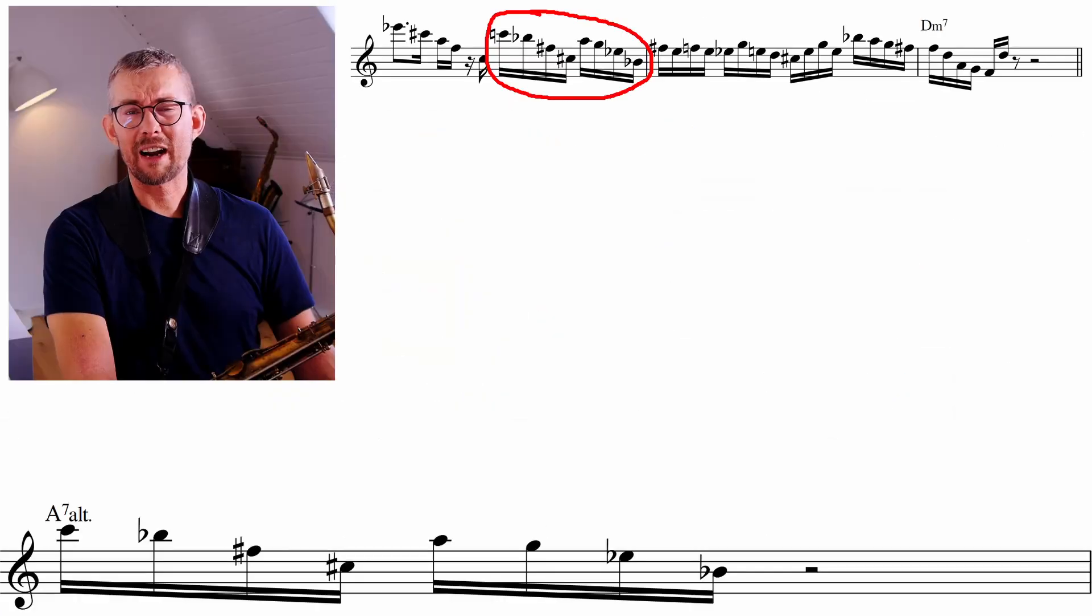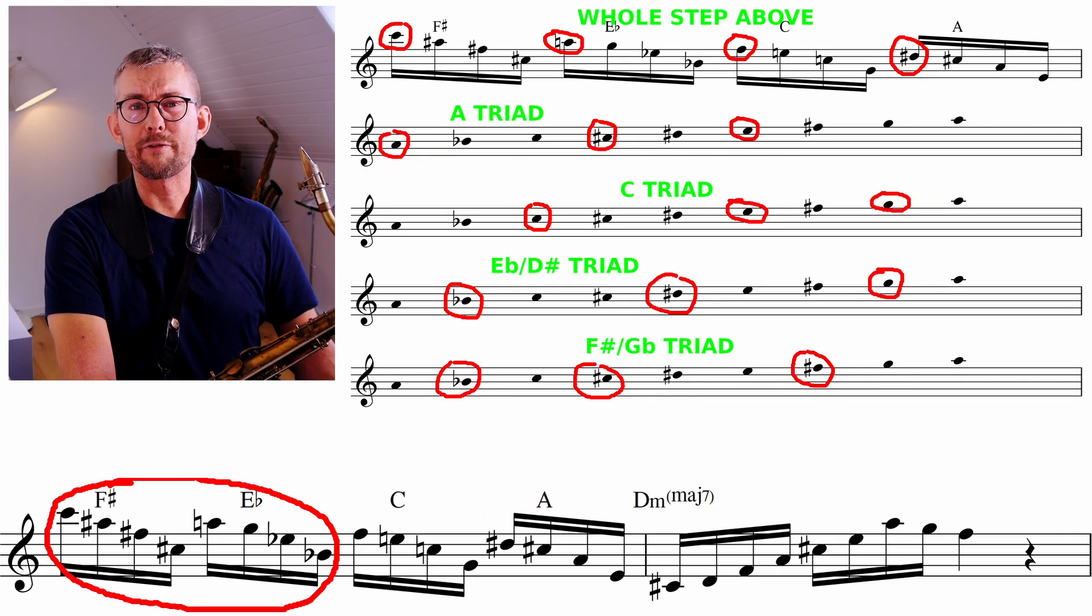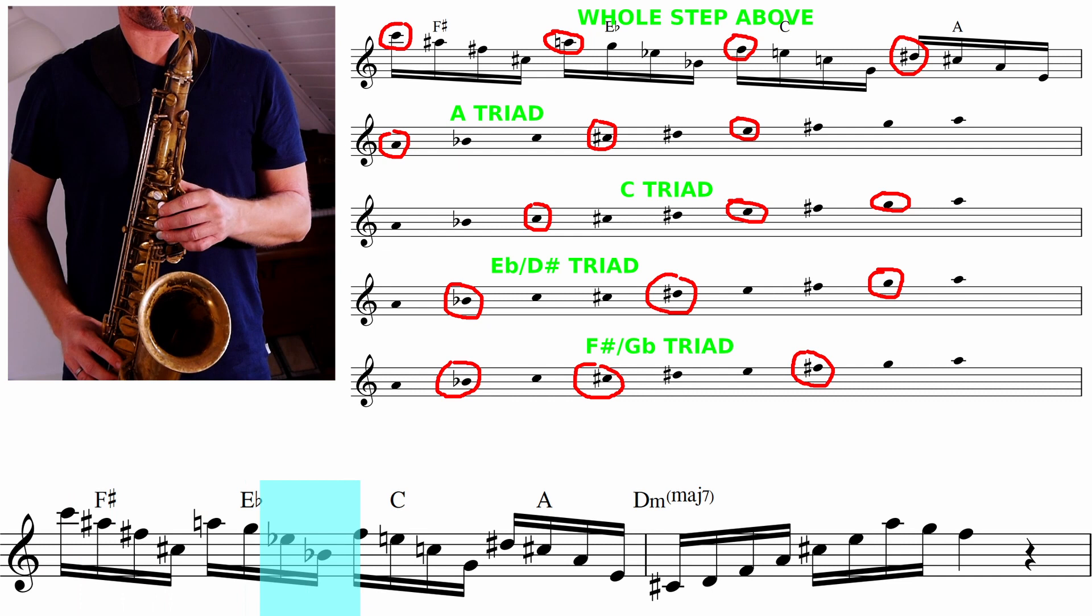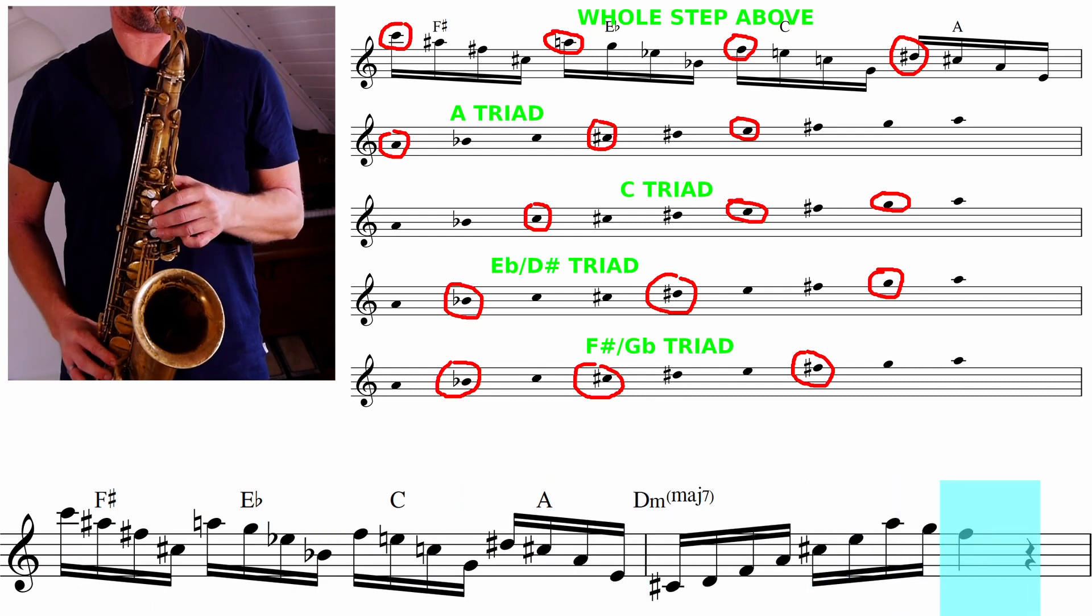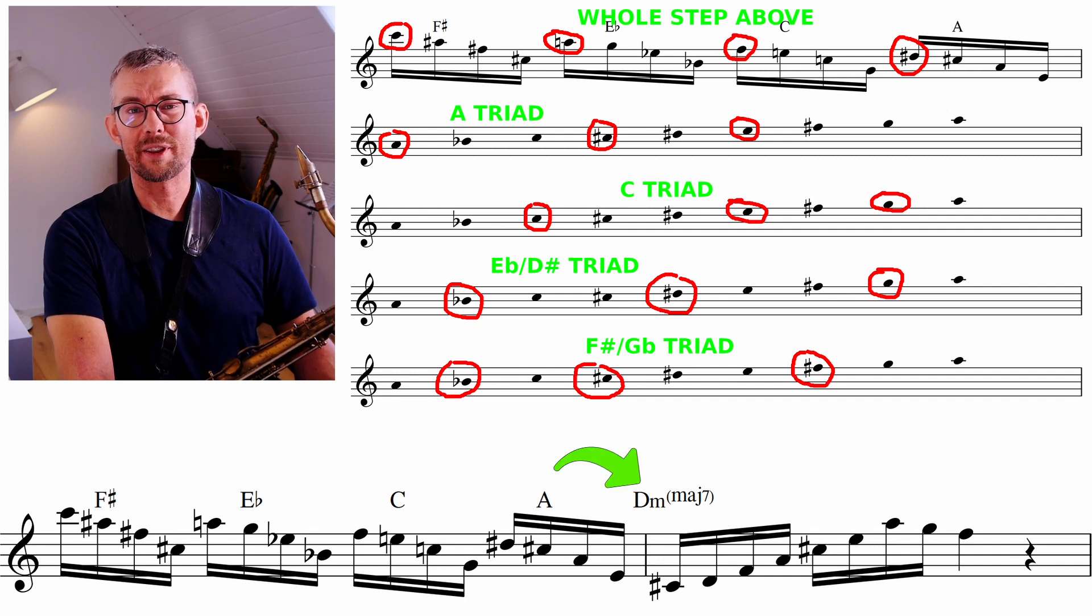The next part of Michael Brecker's solo is again major triads with a leading tone. If you play this pattern you use all 4 major triads in the octatonic scale, adding a whole step above the triad. Continuing the pattern using all 4 major chords with that leading tone above, it's a great line and it resolves beautifully to the D minor chord.